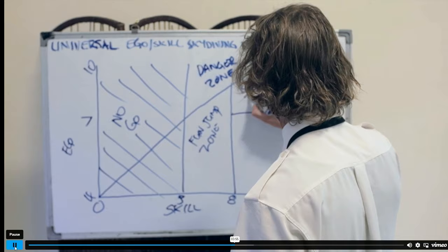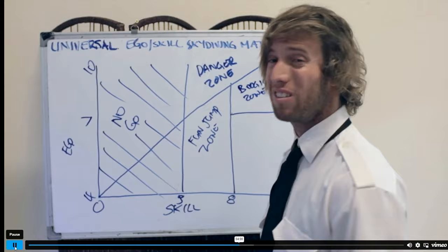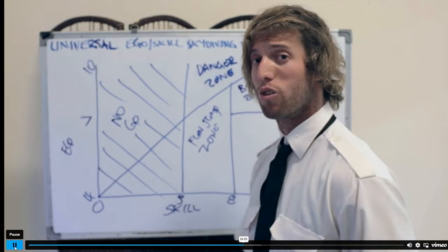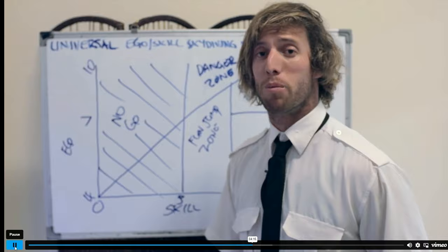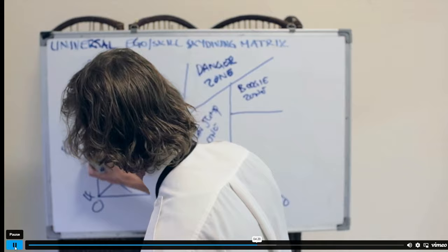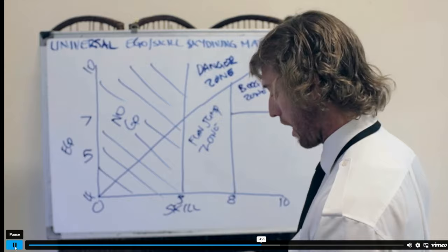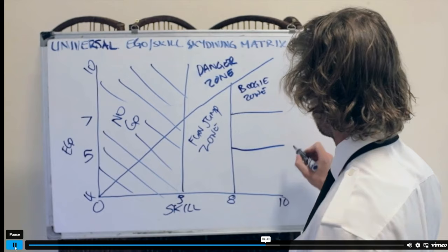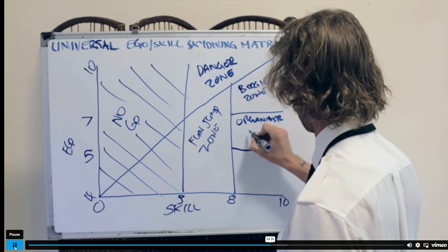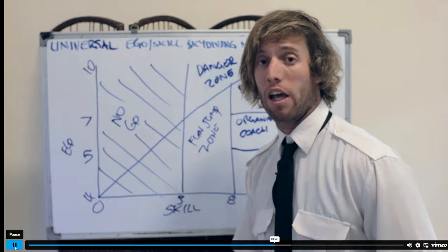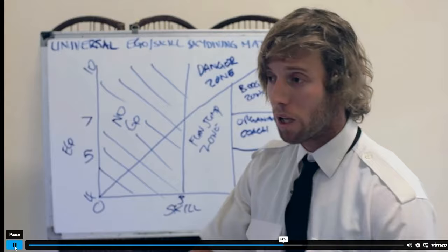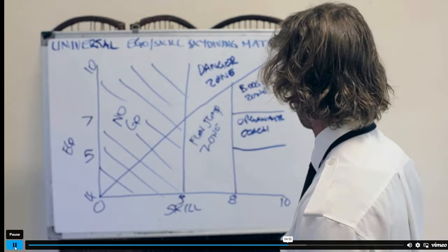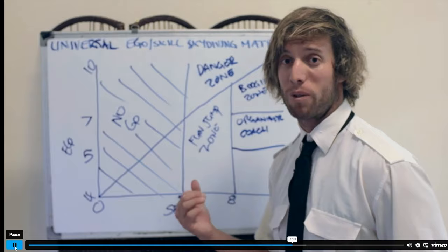In the boogie zone, we've moved up in the world, we're starting to get our skills, going to boogies. These people you want to hang out with — their ego's not too bad, they're good to jump with. Once you get there you're reasonably happy, but you're always wanting to push on. Dropping your ego between five and seven, you'll find the organiser-coach zone — this is where everyone aspires to get to. These are the guys you want to learn from and jump with.